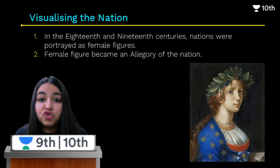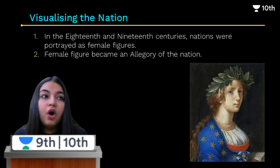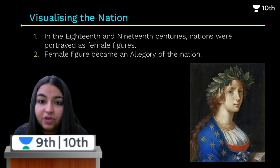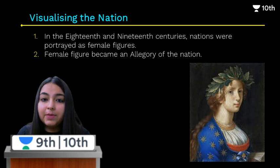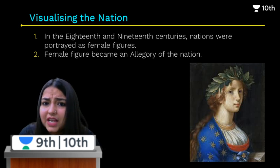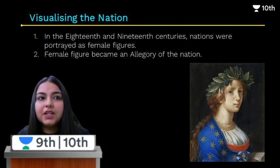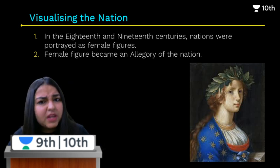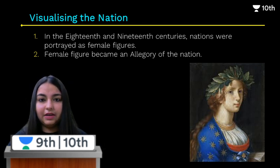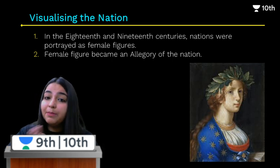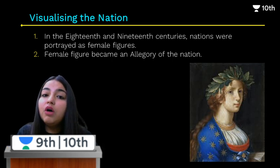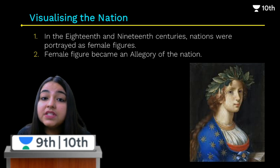For example, take feelings like envy or jealousy — we say 'tujhme itni aag kyun lag rahi hai' (why is there so much fire in you), symbolizing the feeling of envy with the symbol of fire. Similarly, artists began to portray and personify nations as female figures — allegories.